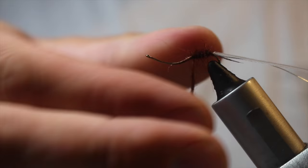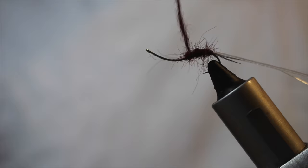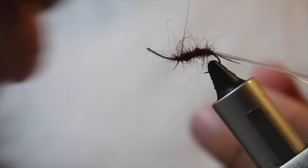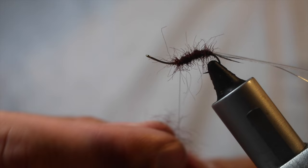Moving along. Some people wrap ostrich herl dyed brown around their iso nymphs. I'm not a huge fan of it just because it adds another step, and ostrich herl is a very weak material. So, you know, a fish or two and you've got to take that ostrich right off. But it's personal preference. Get a little bit more here, dub that on.